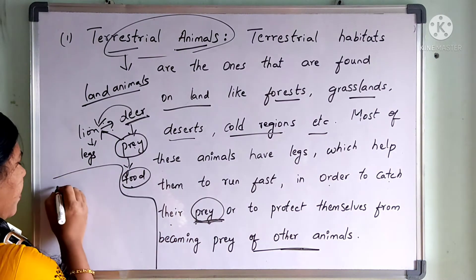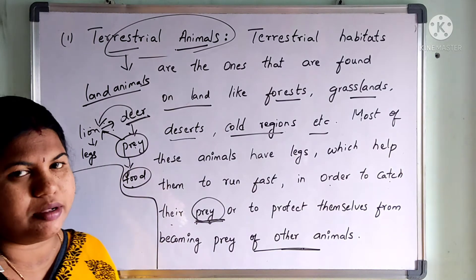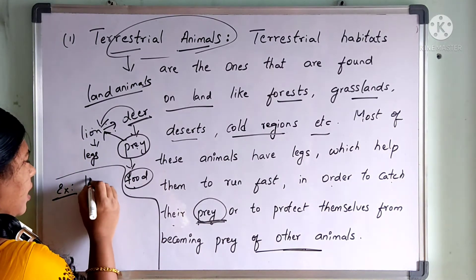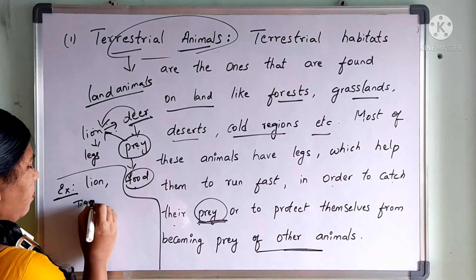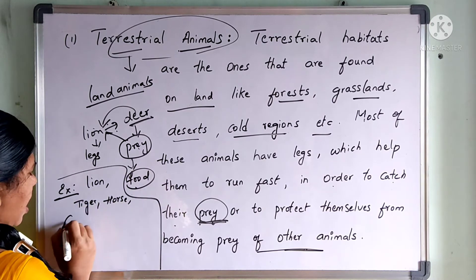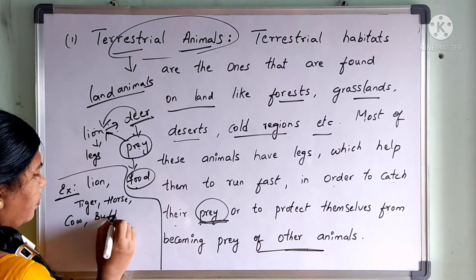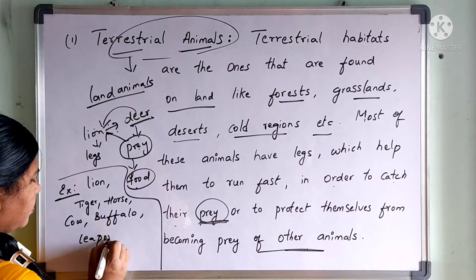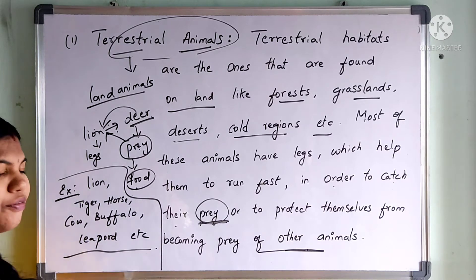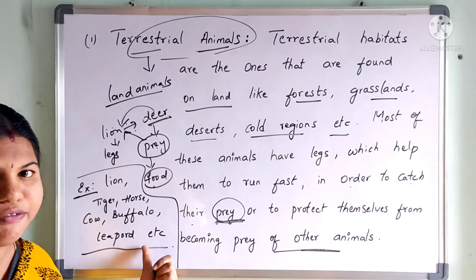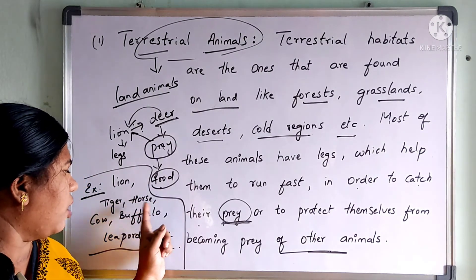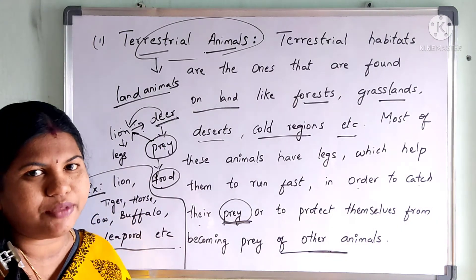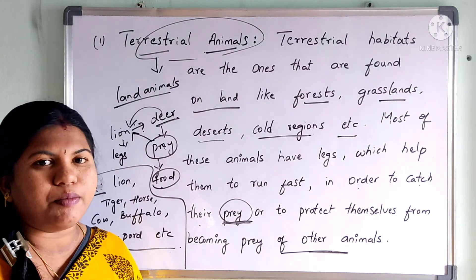Now let us see some examples of terrestrial animals. We have many kinds of animals living on the land, such as lion, tiger, horse, cow, buffalo, leopard, etc. Many of these animals have legs which help them to run faster. These are some of the examples of terrestrial animals.